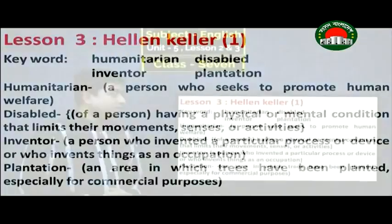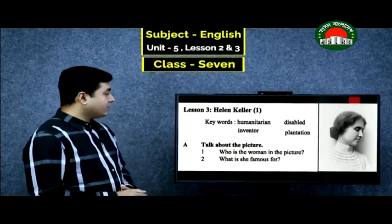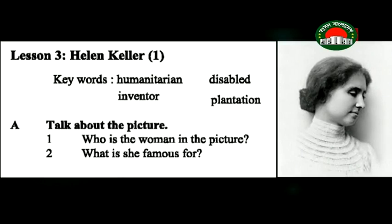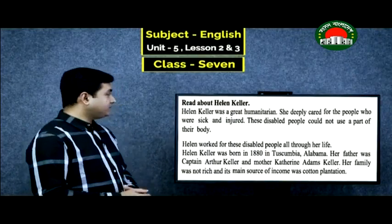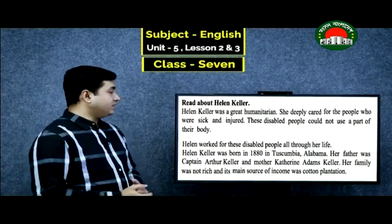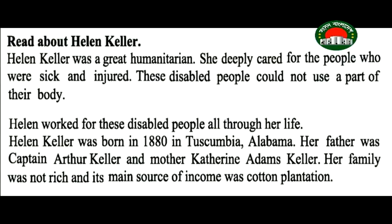Now let's read about Helen Keller. Helen Keller was a great humanitarian — she worked for the welfare of human beings and deeply cared for people who were sick and injured. These disabled people could not use a part of their body, and Helen worked for them all through her life. Helen Keller was born in 1880 in Tuscumbia, Alabama. Her father was Captain Arthur Keller and her mother was Catherine Adams Keller. Her family's main source of income was cotton plantation.